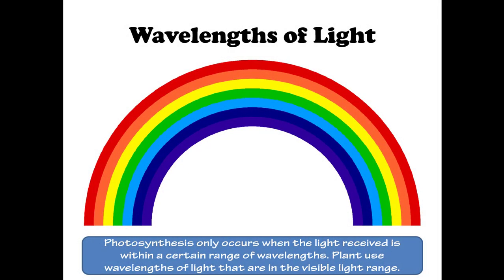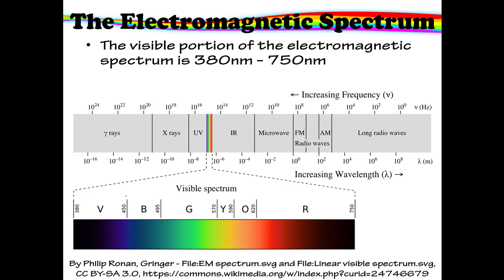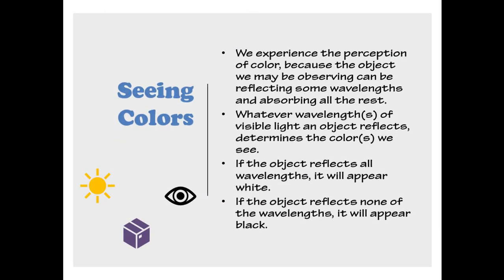Photosynthesis only occurs when the light received is within a certain range of wavelengths. Plants use wavelengths of light in the visible light range, which spans between 380 nanometers and 750 nanometers. We experience the perception of color because the object we observe reflects some wavelengths and absorbs all the rest. If the object reflects all wavelengths it will appear white; if it reflects no wavelengths it will appear black.